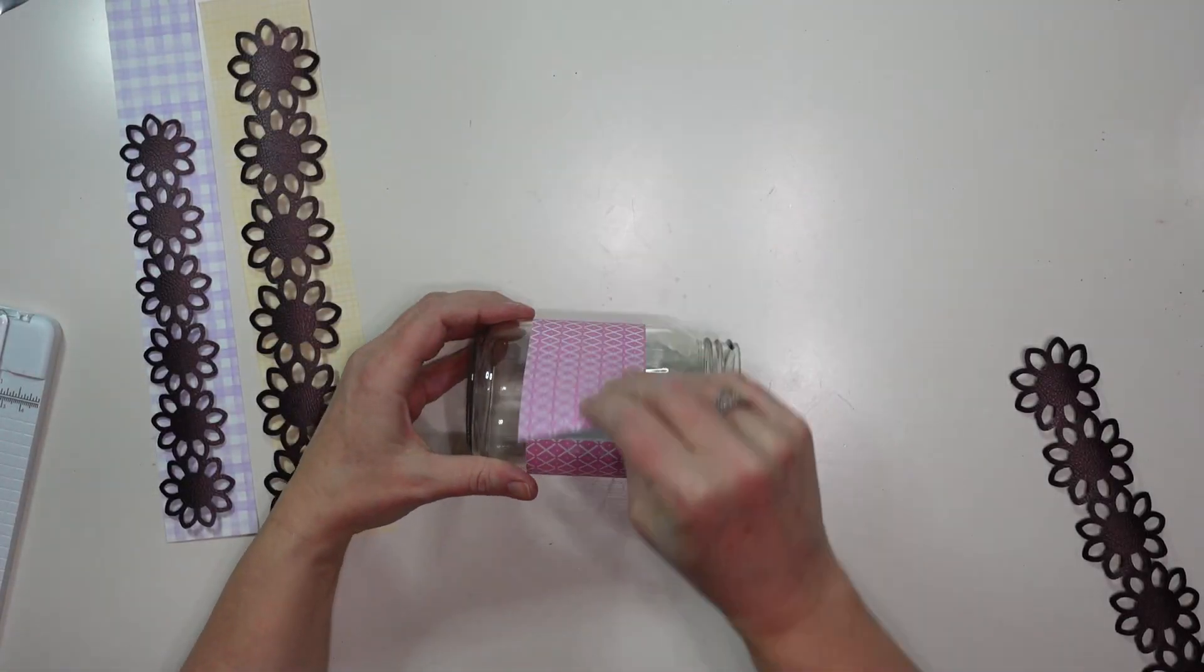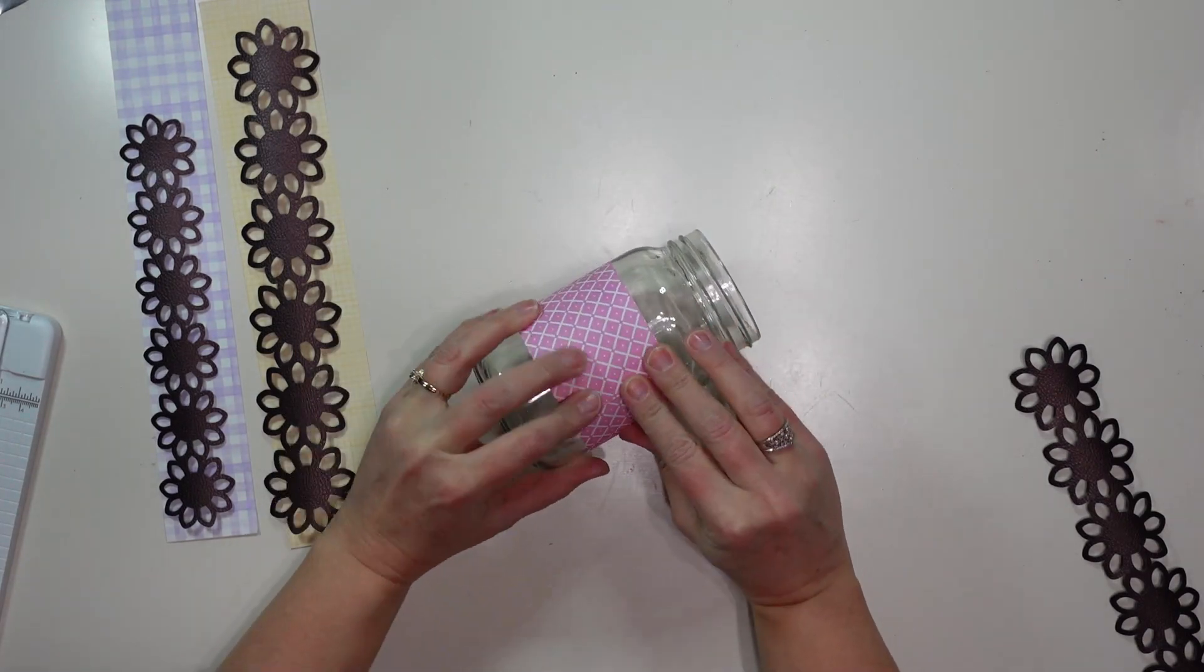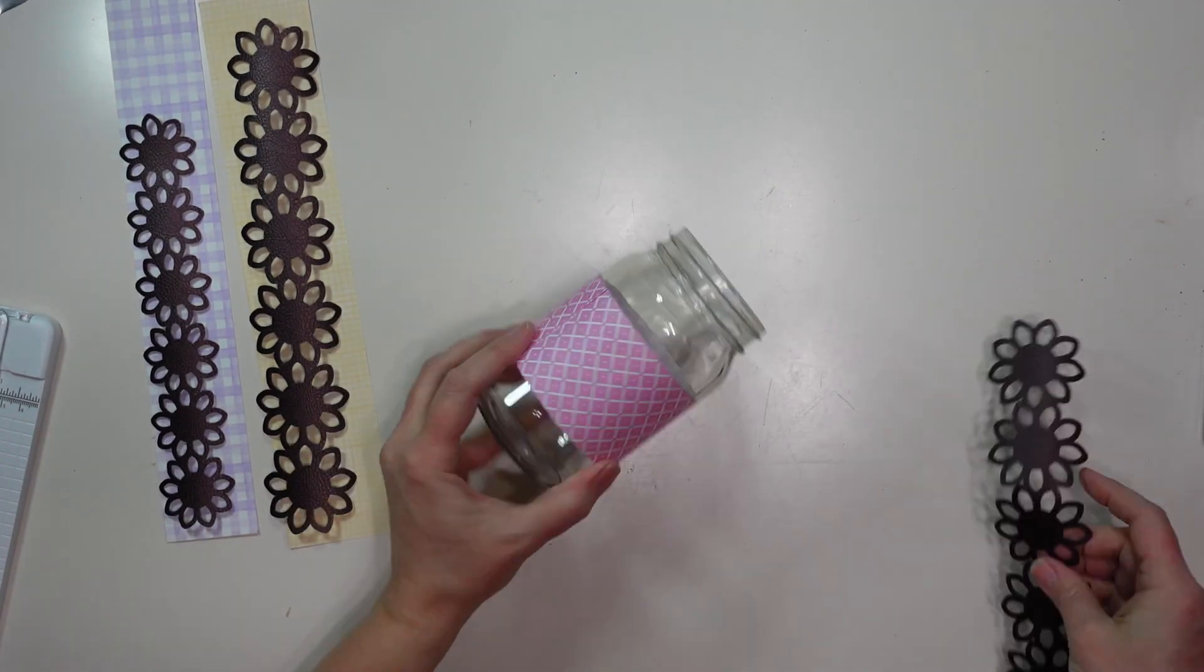I am going to use just some plain old scotch tape to attach my paper around the center of each jar.